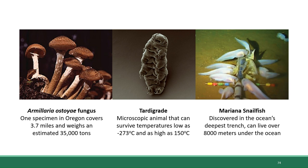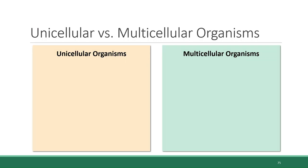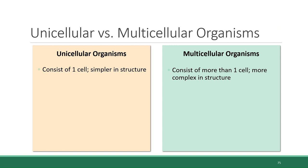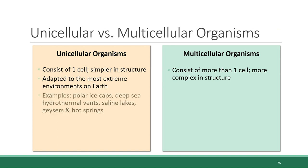But before we can talk about biodiversity, we need to introduce a little bit about the characteristics of living organisms and how they are classified. All life on Earth is either unicellular or multicellular. Unicellular organisms consist of just one cell and are therefore simpler in structure, whereas multicellular organisms consist of more than one cell and are more complex in structure. However, the simplicity of unicellular organisms gives them an advantage, which is the ability to adapt to some of the most extreme environments on Earth.